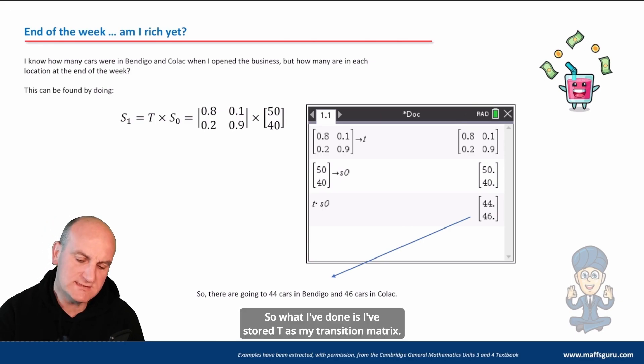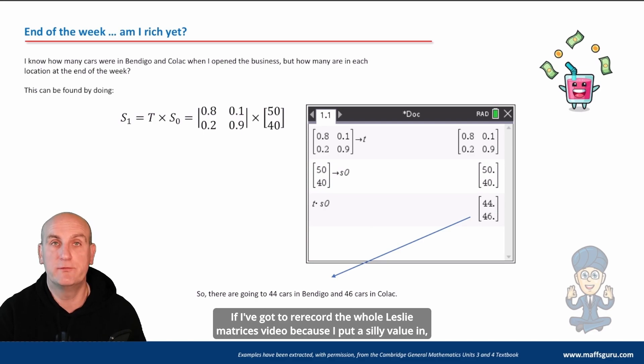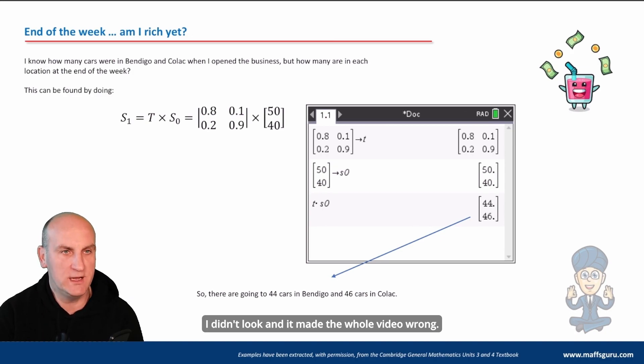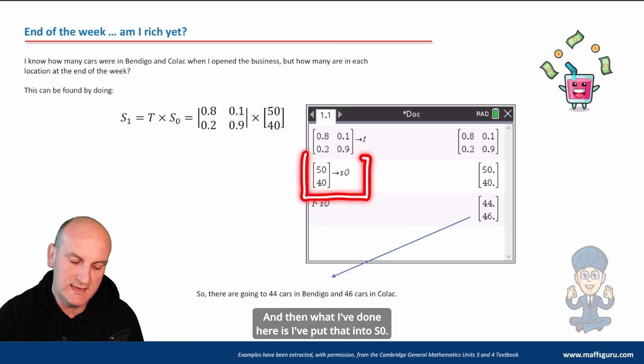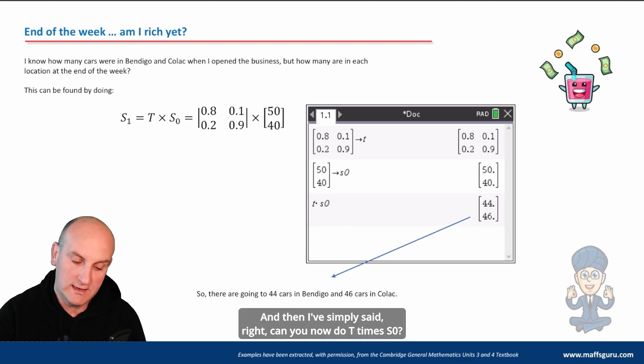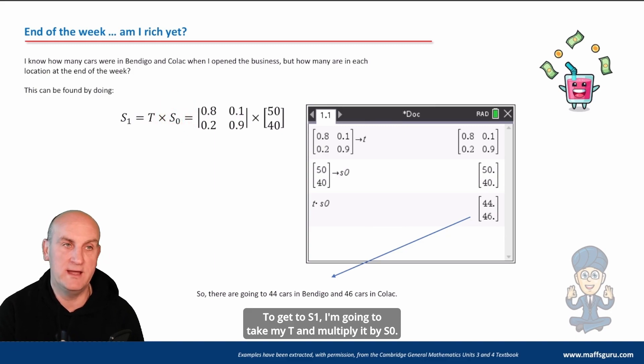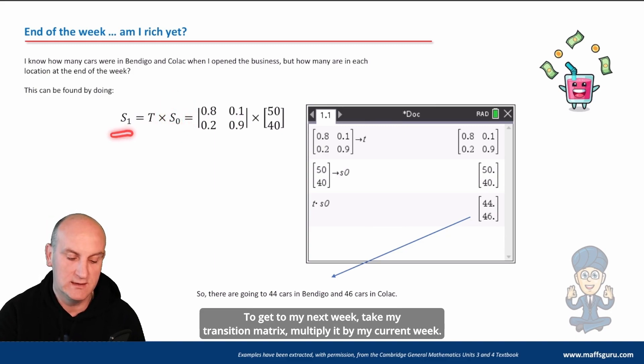So what I've done is I've stored T as my transition matrix. And again, when you put these things in, always make sure that you put them in correctly. A number of times I've done them, in fact I've got to re-record the whole Leslie matrices video because I put a silly value in, I didn't look, and it made the whole video wrong. That's okay. And then what I've done here is I've put that into S₀. And you'll notice that for the TI-Inspire you can actually put S₀ as a matrix. And then I've simply said, right, well can you now do T times S₀? That's this calculation here. To get to S₁, I'm going to take my T and multiply it by S₀ to get to my next week. Take my transition matrix, multiply it by my current week. So there we go, put that into my calculator.